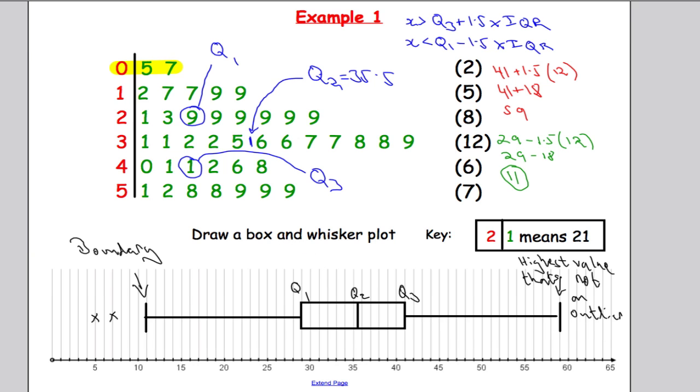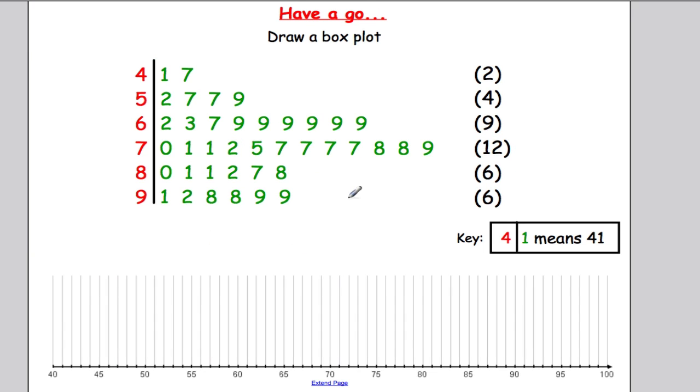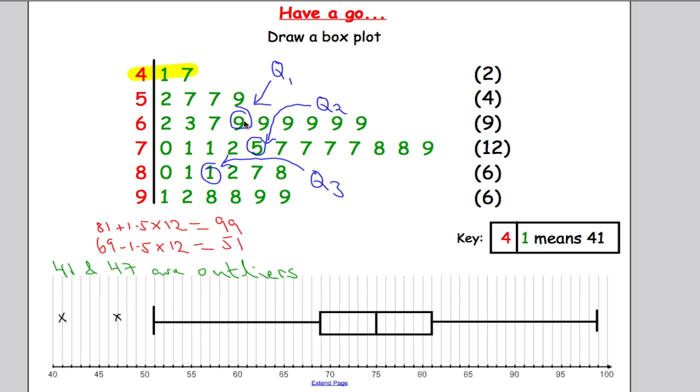Okay, time for you to have a go. So pause the video and draw a box plot for this stem and leaf diagram. Okay, hopefully you've managed to do that. So I identified Q1 as 69, Q2 was 75, and Q3 was 81. So I used the formula to check where my outliers were. Anything above 99, so 99 was my boundary. Or anything below 51 was going to be an outlier. And I've marked 41 and 47 as the outliers.